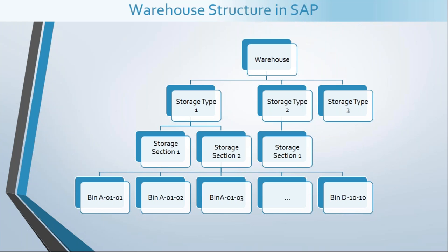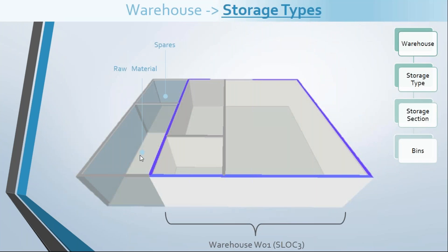Coming to the interesting part of this tutorial, we will now talk about the warehouse structure in the SAP system. This graphic represents the hierarchy of elements in an SAP warehouse structure. At the top we have a warehouse, which is then divided among multiple storage types. Each storage type can be divided among multiple storage sections, and finally under those sections we create storage bins. It is also important to mention that there is something called a picking area, but it is not mandatory, so we have not shown it as part of the main structure.